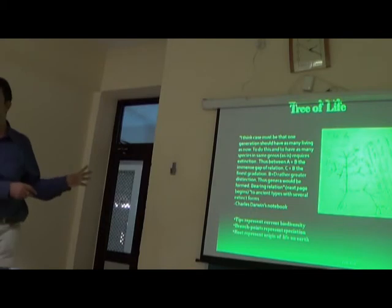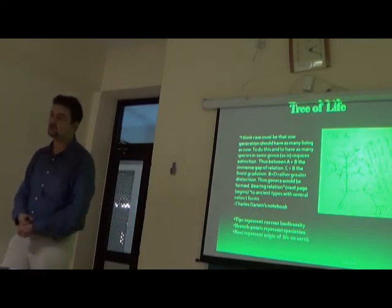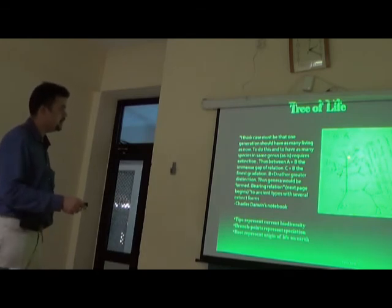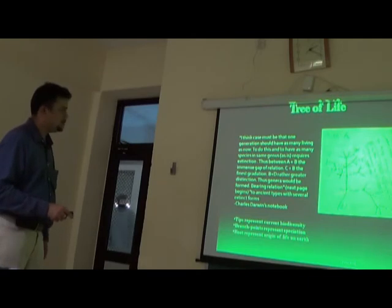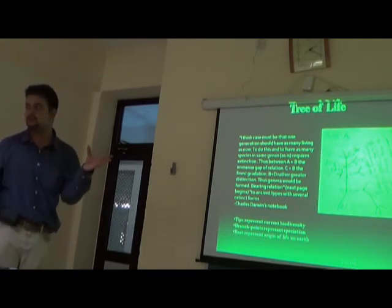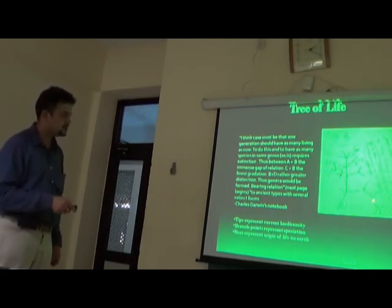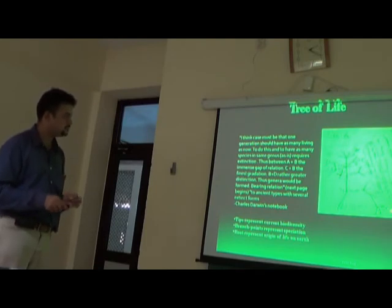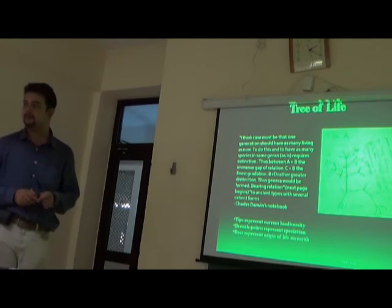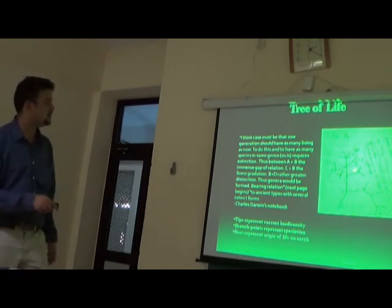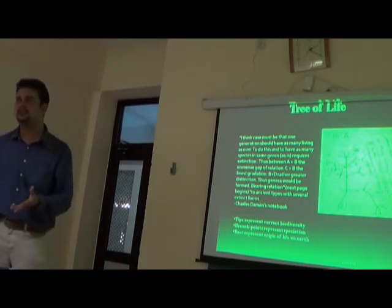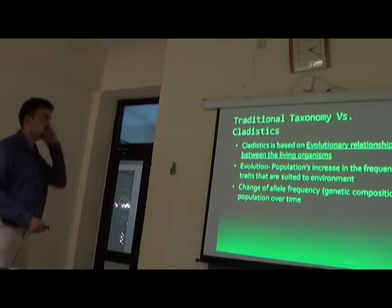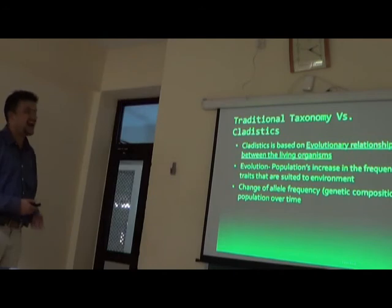In the Tree of Life, branching points are called nodes and represent speciation events — where one species gives rise to two. The tips or leaves represent extant species currently observable, while lost tips represent extinct species. Traditional taxonomy, introduced by Linnaeus, involves clustering organisms by phenetic similarity. Cladistics, on the other hand, is based on evolutionary relationships — grouping organisms by shared derived characters and common ancestry.